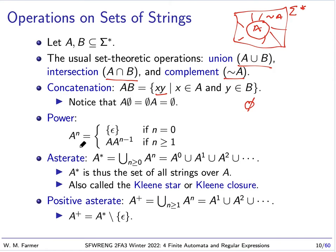We can define the power of a set of strings: A to the nth power is the set containing just the empty string when n is zero, and otherwise the concatenation of A with itself n times. Another operation is the asterate: A-star equals the union of all these powers — the zeroth, first, second, and so on. It's an infinite union, and A-star is thus the set of all strings over A. This is also called the Kleene star, or Kleene closure.